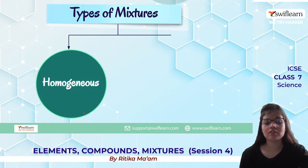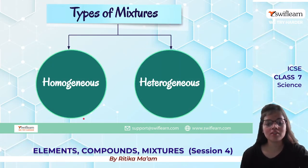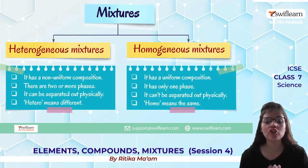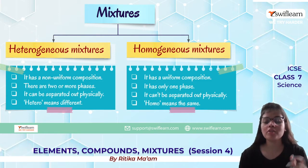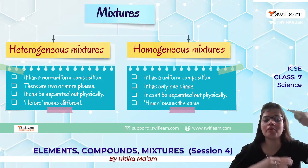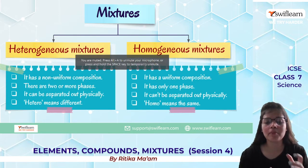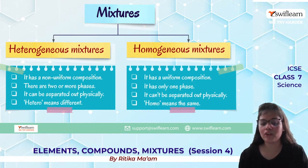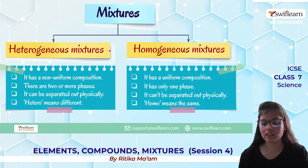Types of mixture: there are two types — homogeneous and heterogeneous. Heterogeneous mixtures have non-uniform composition and two or more phases, and they can be separated physically. Homogeneous mixtures have uniform composition throughout and only one phase — they cannot be separated physically. 'Homo' means same and 'hetero' means different.